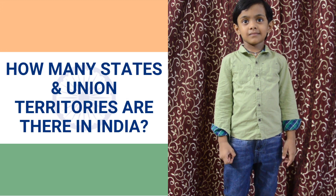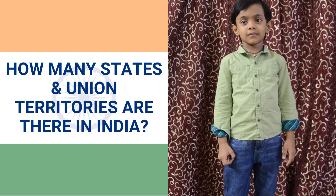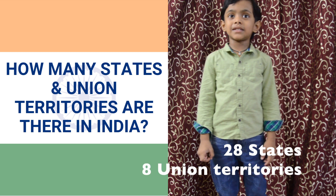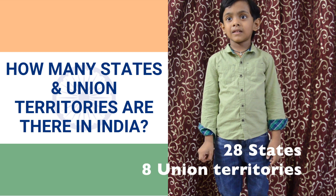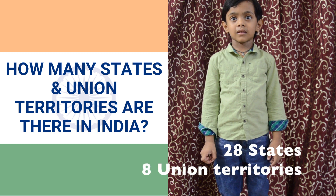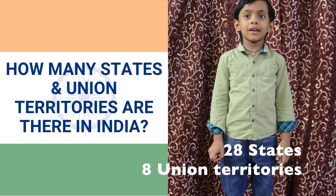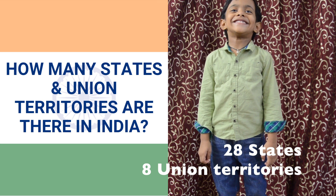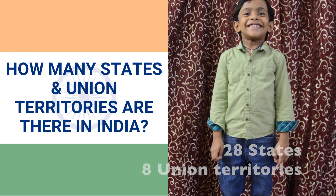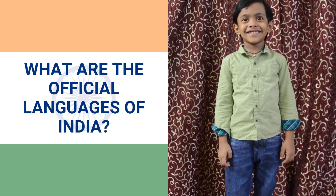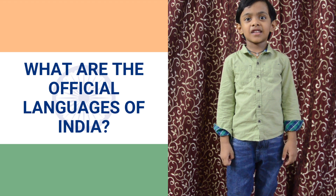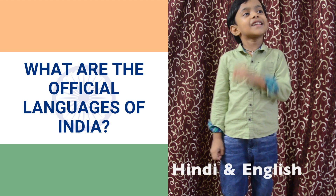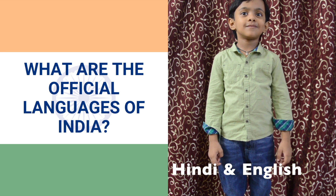How many states and union territories are there in India? 10 states, 8 union territories. What are the official languages of India? Indian English.